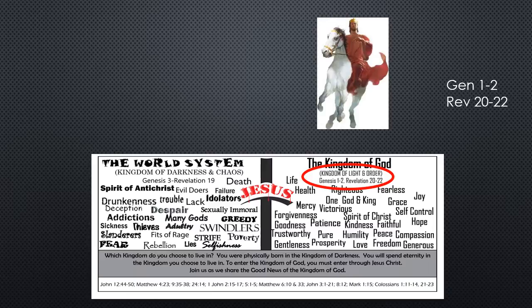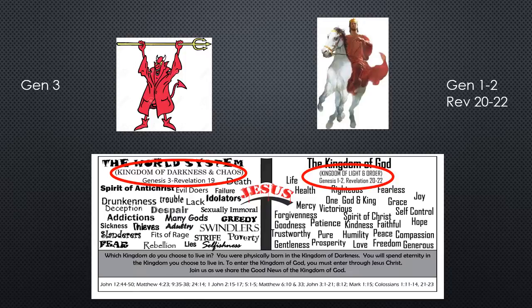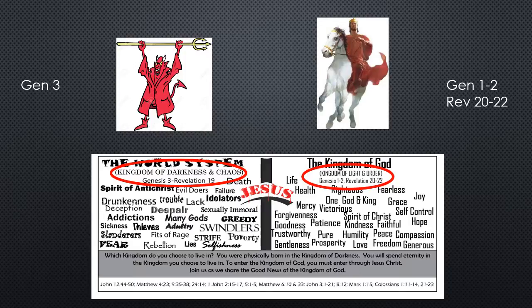If you go to the left side, you're going to see the world system. And that's the kingdom of darkness and chaos. Now that system was introduced in scripture in Genesis 3 when Adam chose to know what evil was about. He only knew what the kingdom of God was like in Genesis 1 and 2. He didn't know anything about those things you find in the world system on the left hand side. But when he chose to know what the left side was all about, he introduced all those behaviors to us. We struggled with them ever since, and we will struggle with them until we trust Jesus Christ as our Savior and get the victory, or Jesus returns to restore his kingdom on this earth in Revelation 20 through 22.